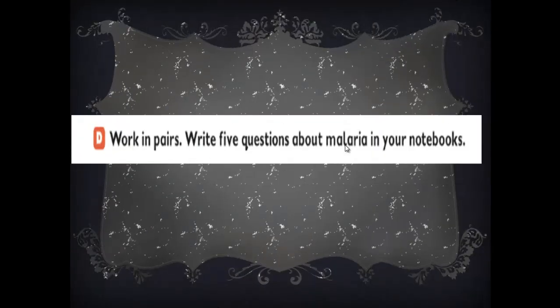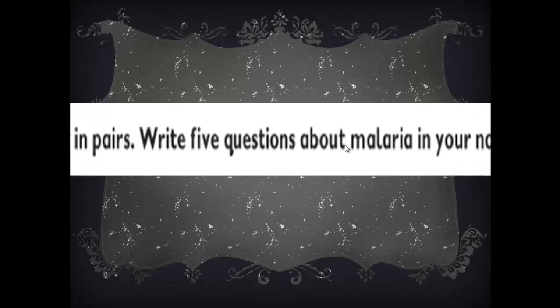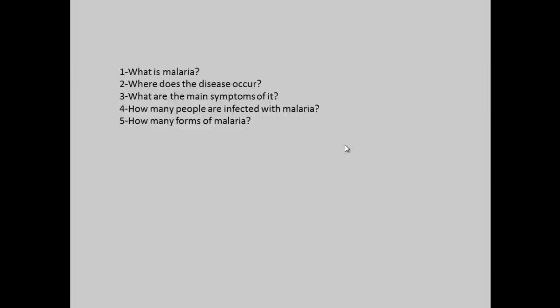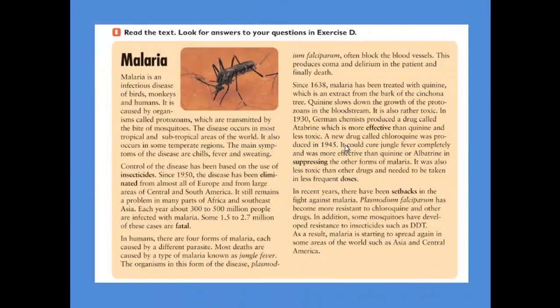Practice D: work in pairs and write five questions about malaria in your notebooks. We can write the following questions: number one, what is malaria? Two, where does the disease occur? Three, what are the main symptoms of it? Four, how many people are infected with malaria? And five, how many forms does this disease have? These are the five questions. Then practice E: read the text and look for answers to your questions in exercise D.